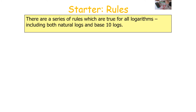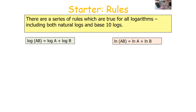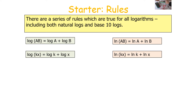There are a series of rules which are true for all logarithms, including both natural logs and base 10 logs. The first rule is that log(A × B) equals log A plus log B. So when two numbers are multiplied together, we can separate them as additive log terms. For example, log(KX) equals log K plus log X, and likewise LN(KX) equals LN K plus LN X.